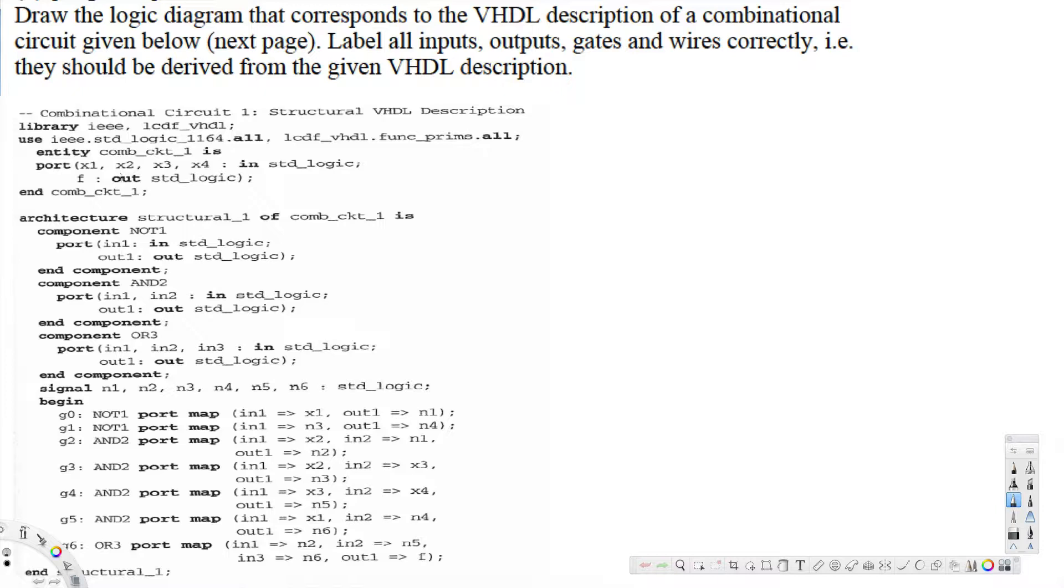First of all, you can see we have input and output here. The main thing is we have to find out the input and output in the port. They have given the input: we have x1, x2, x3, x4 as inputs, and f is output. Also here we have the gates and the connected gates.